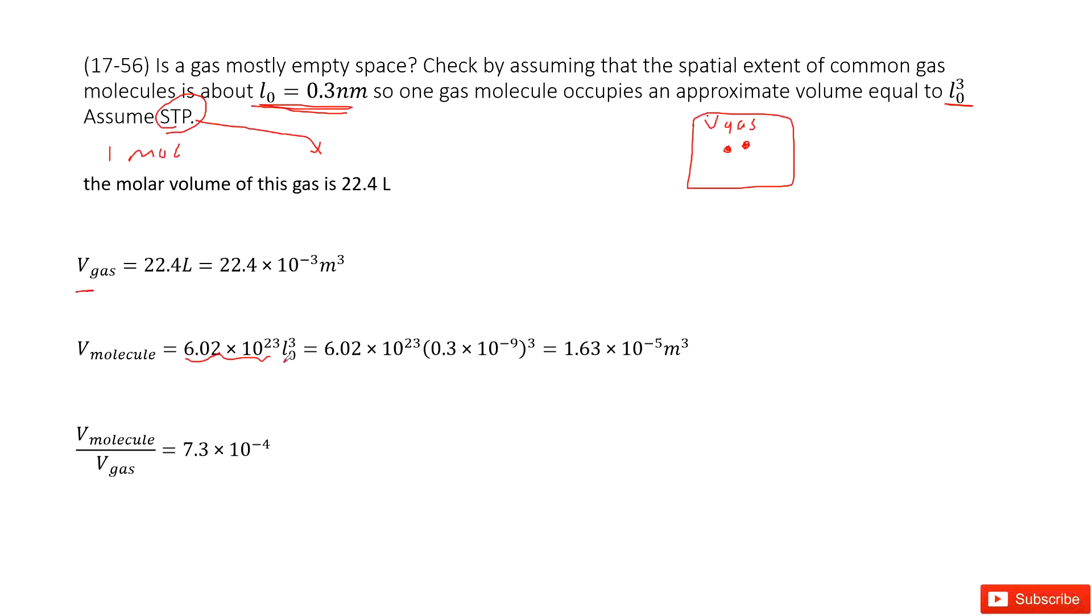L0 cubed is the space for one molecule, and for one mole of gas, this is the number of molecules. So use this constant times L0 cubed, we get the space occupied by molecules, V molecules.